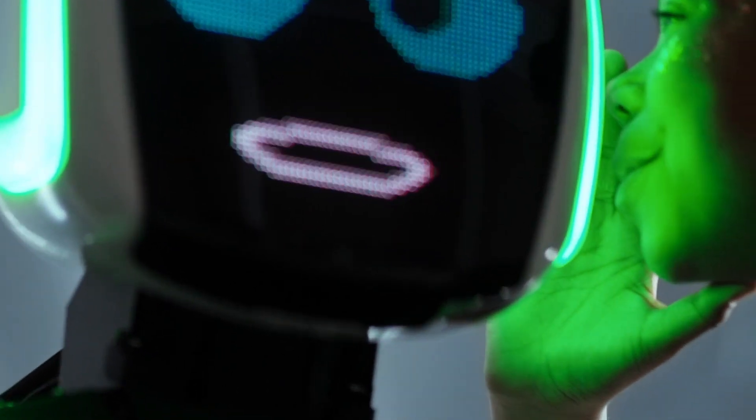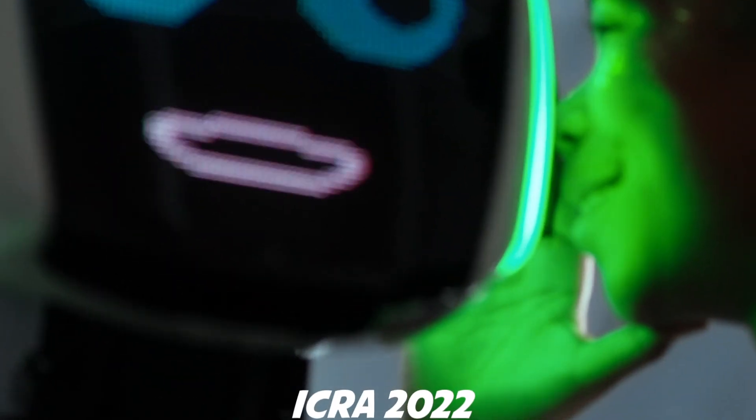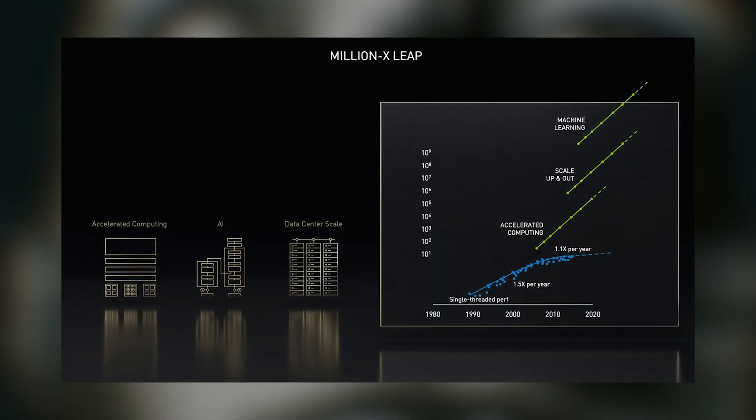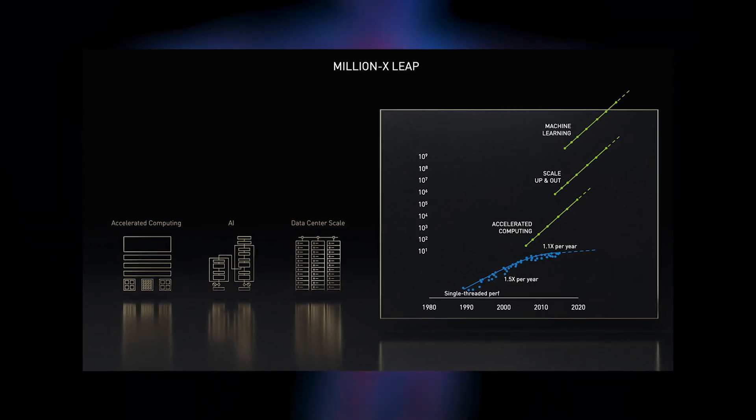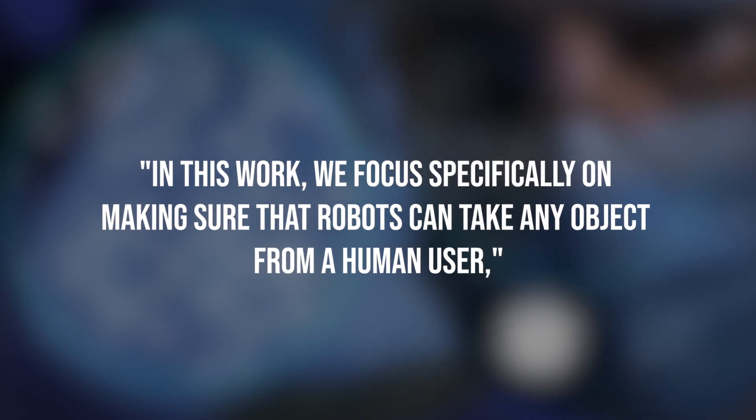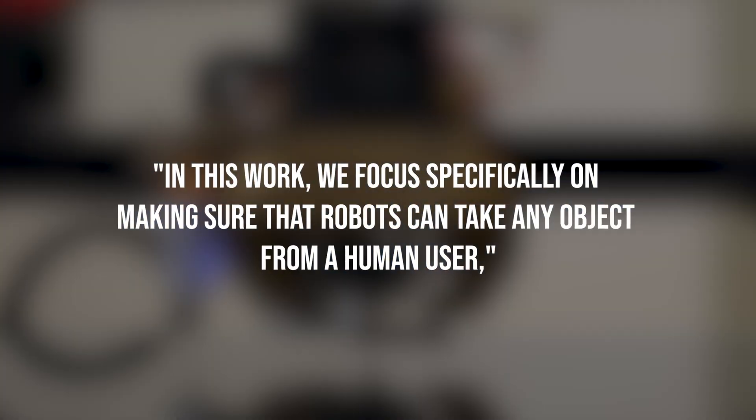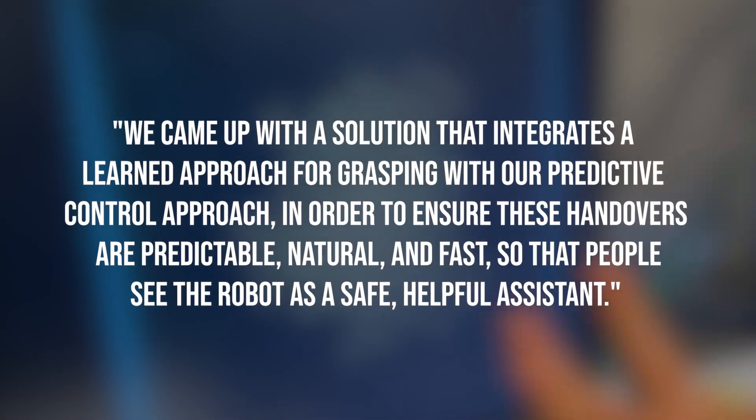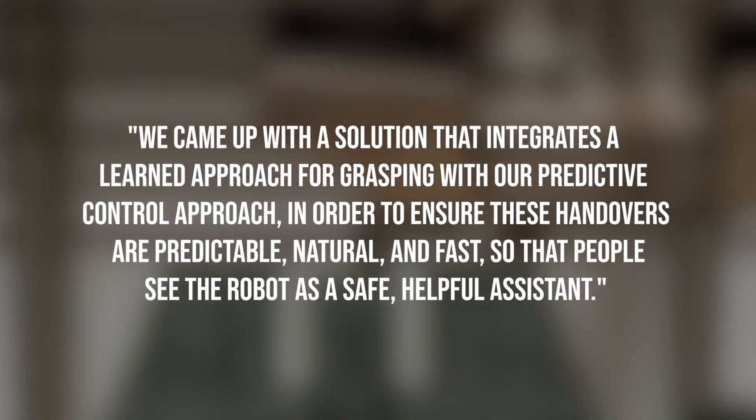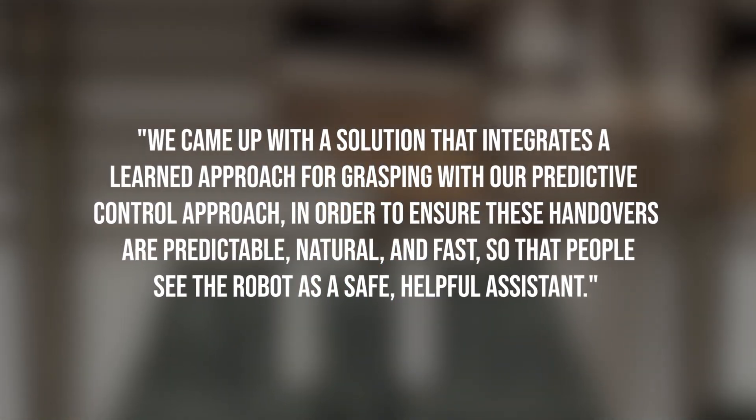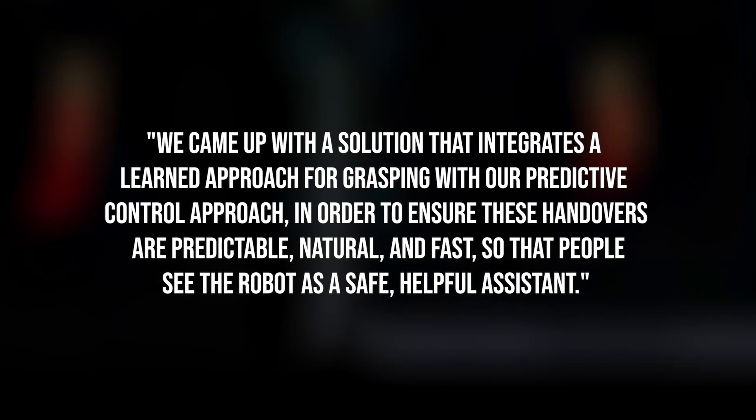This approach, introduced in a paper set to be presented at ICRA 2022, is based on a framework called STORM, which they presented in one of their previous works. "In this work, we focus specifically on making sure that robots can take any object from a human user," Dieter Fox, one of the researchers who carried out the study, told Tech Xplore. "We came up with a solution that integrates a learned approach for grasping with our predictive control approach in order to ensure these handovers are predictable, natural, and fast, so that people see the robot as a safe, helpful assistant."